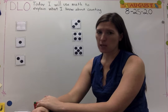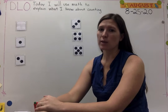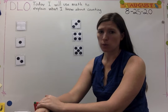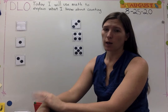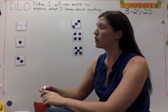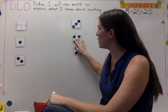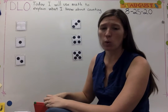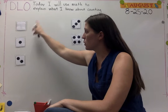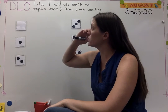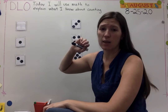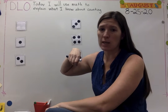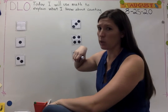In math today, you will be explaining how you know how many numbers there are in the objects in the pictures. So let's do a quick warm-up. Let's read our DLO first, and then we'll start writing and counting and explaining.